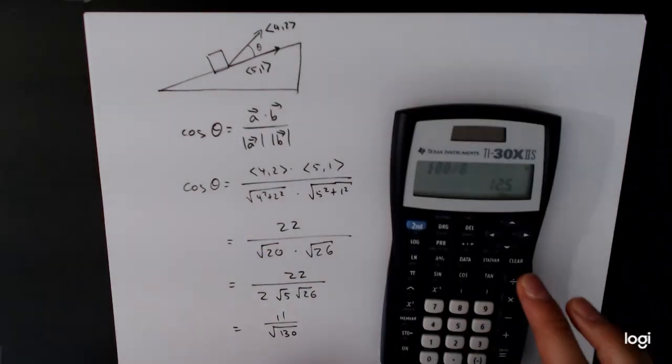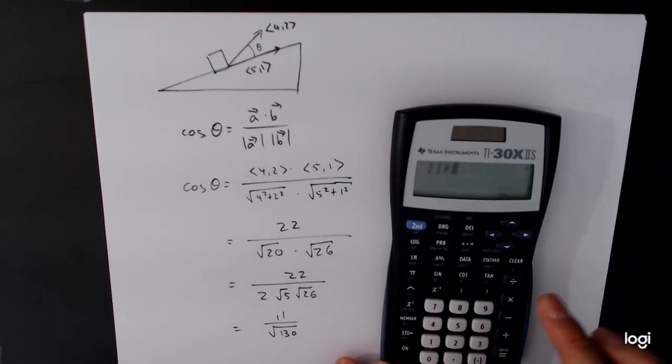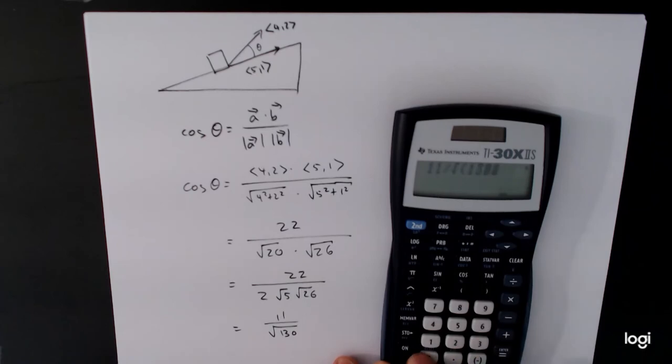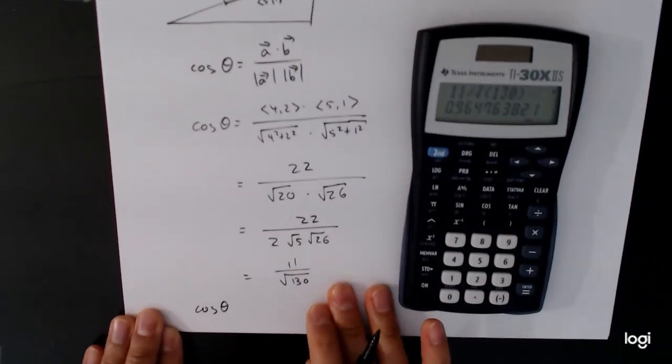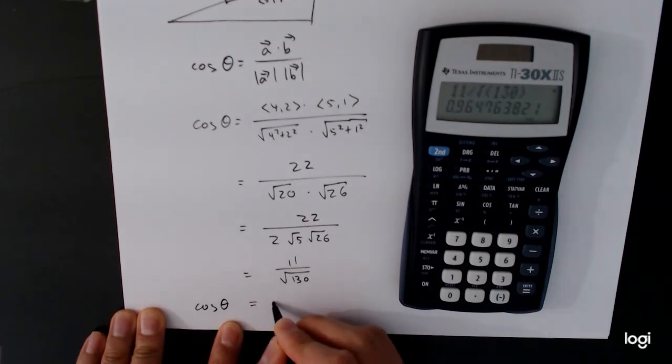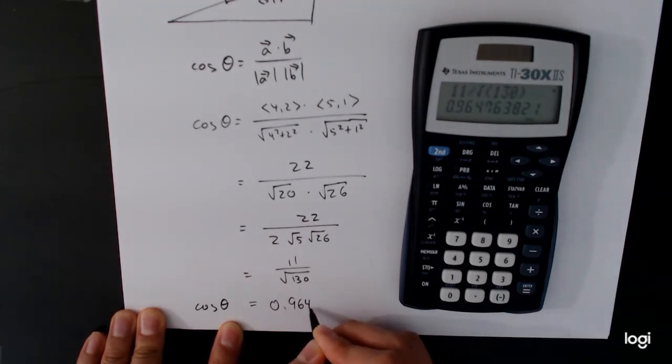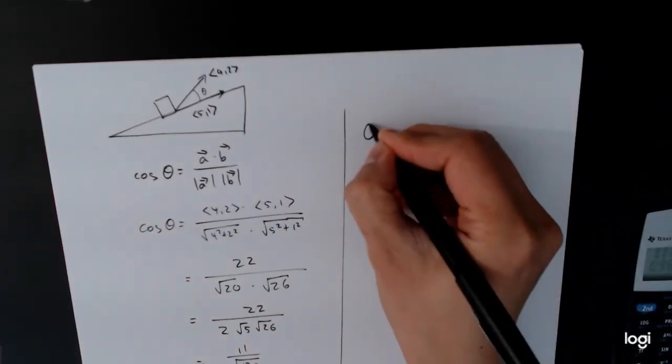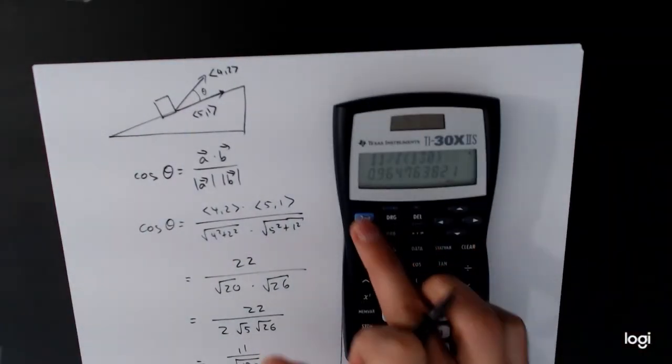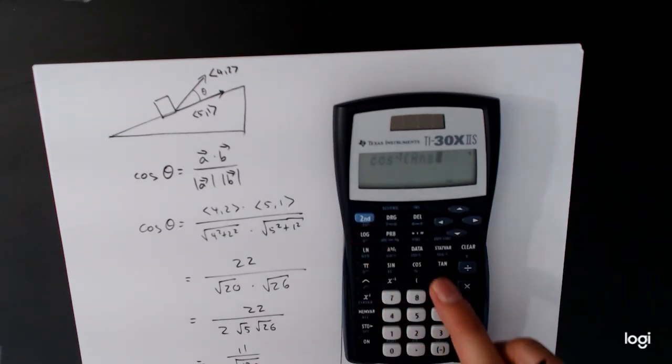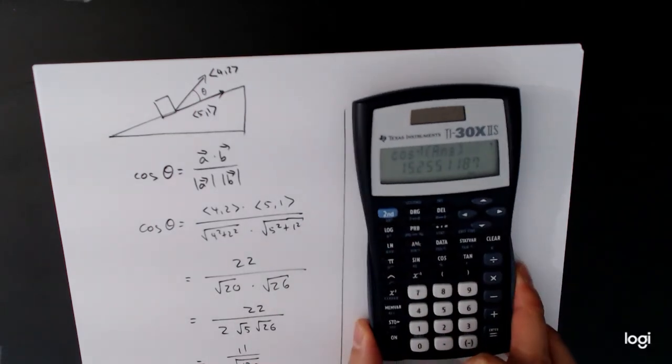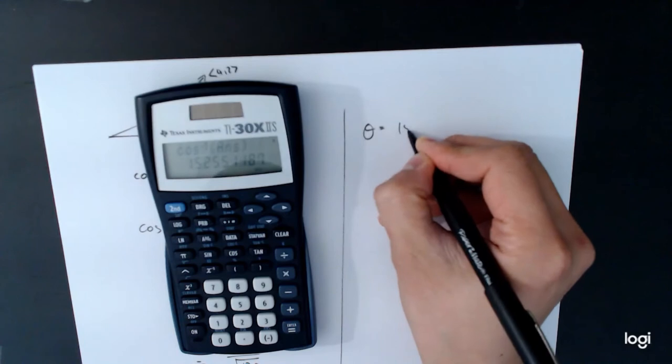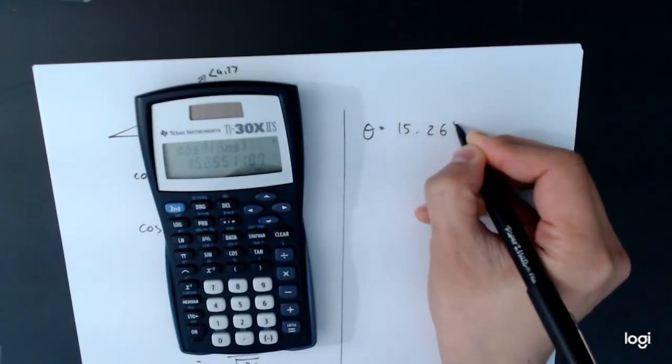Alright, so let's just plug this all in. 11 divided by the square root of 130, so cos theta is equal to 0.9648, and so theta is the inverse cosine of this, inverse cosine of the answer we just got, 15.26 degrees.